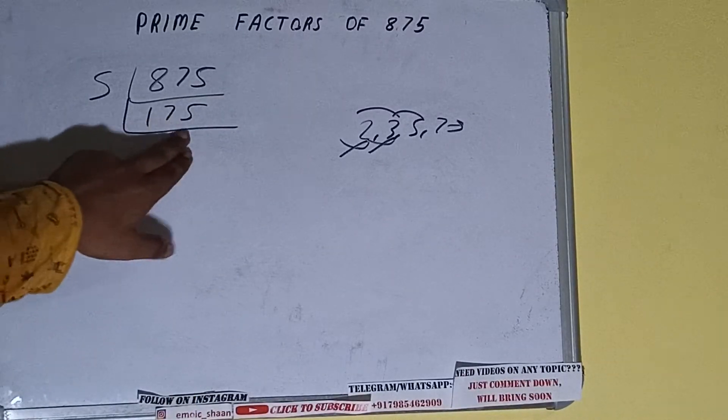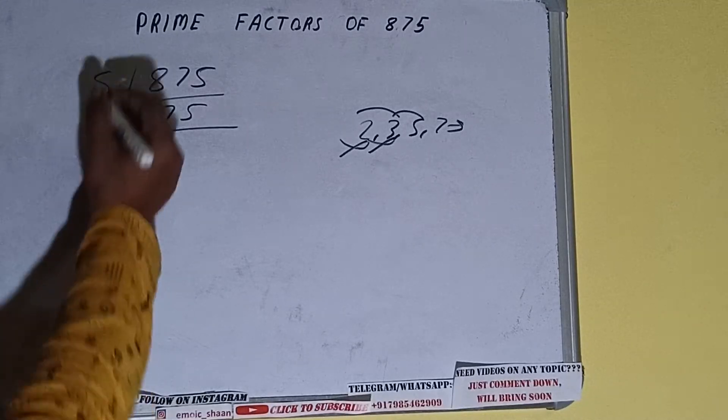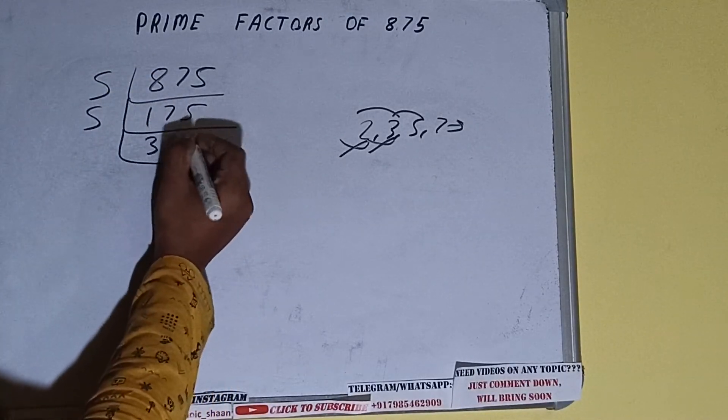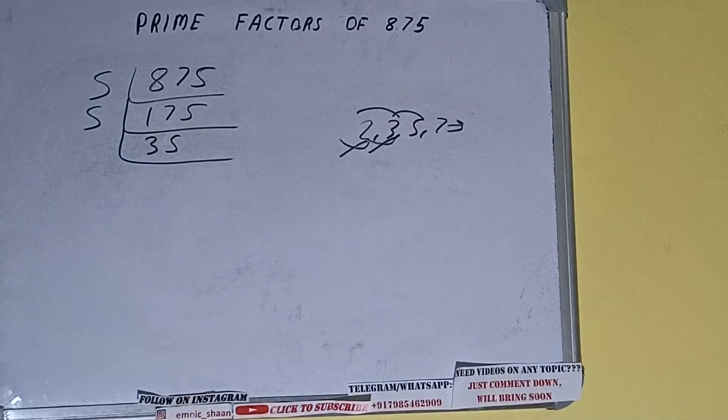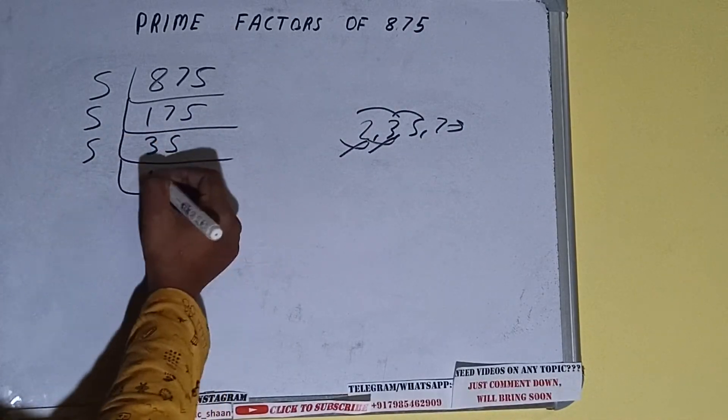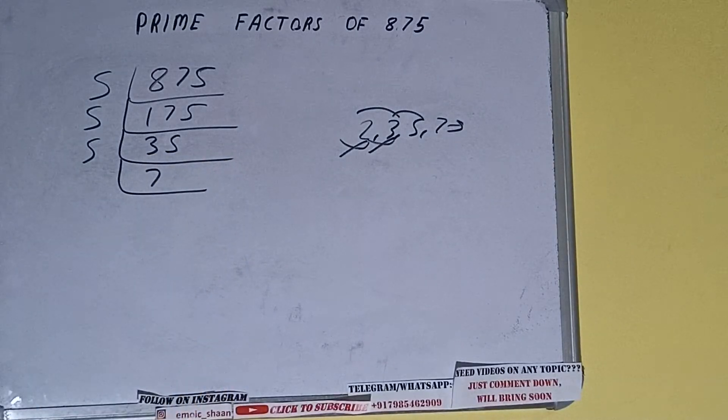So divide it and we'll be having 35. 35 is again divisible by 5, and we'll be having 7. 7 is not divisible by 5, and 7 is also a prime number, so it is only divisible by itself, that is 7.